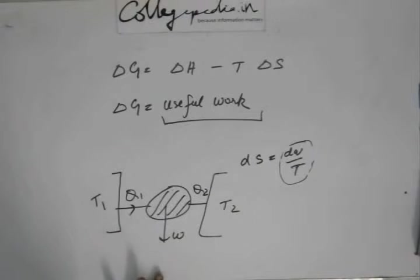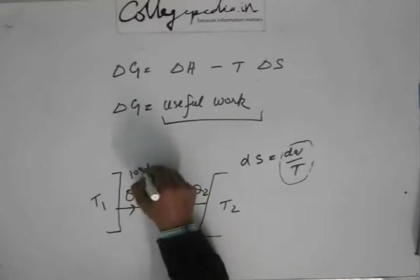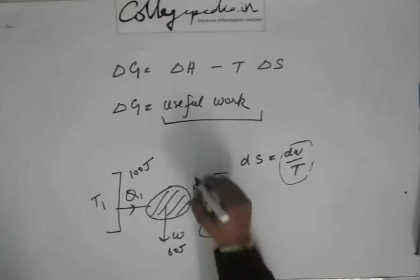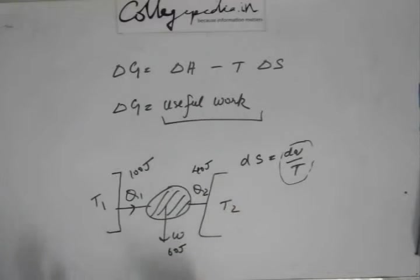So when Q1 amount of heat is given, you have Q2 amount of heat lost, and the rest amount of energy goes into work. So suppose 100 joules of heat was given, work was 60 joules, then the rest of the energy from energy balance, 40 joules goes out as heat. So this is the energy balance.